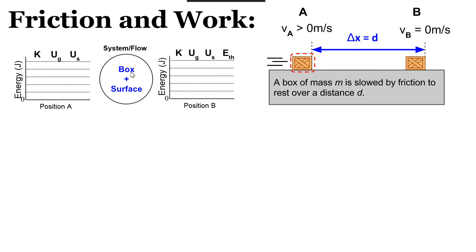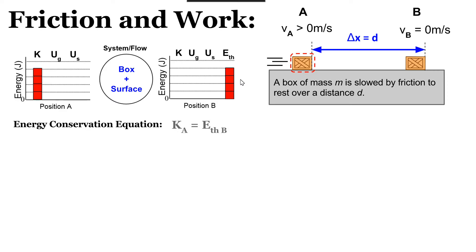If we consider the system as both the box and the surface: at the start, the box is moving so there's energy stored in the kinetic energy account. The floor is at height zero so there's no gravitational potential energy, and nothing is compressed or stretched, so no spring potential energy. At position B, the box comes to rest — no more kinetic energy. When two surfaces slide against each other, they both heat up; the molecules vibrate more vigorously, so that energy is now stored in the thermal energy account. The energy conservation equation gives us: kinetic energy at A equals the thermal energy stored by the box and surface together.